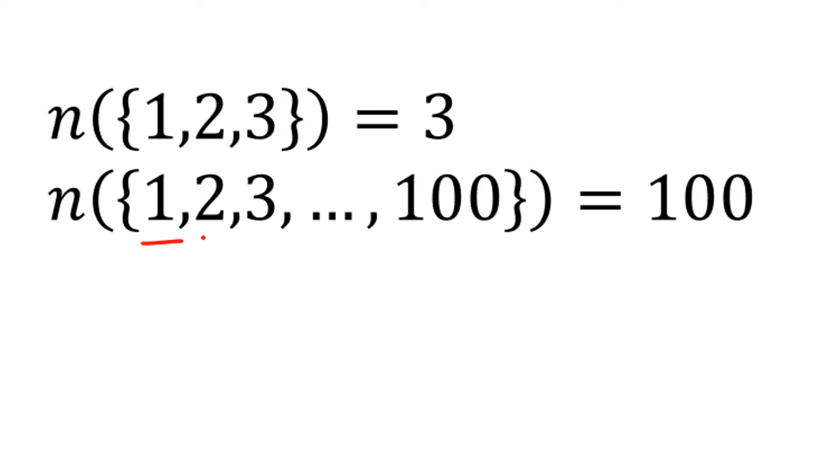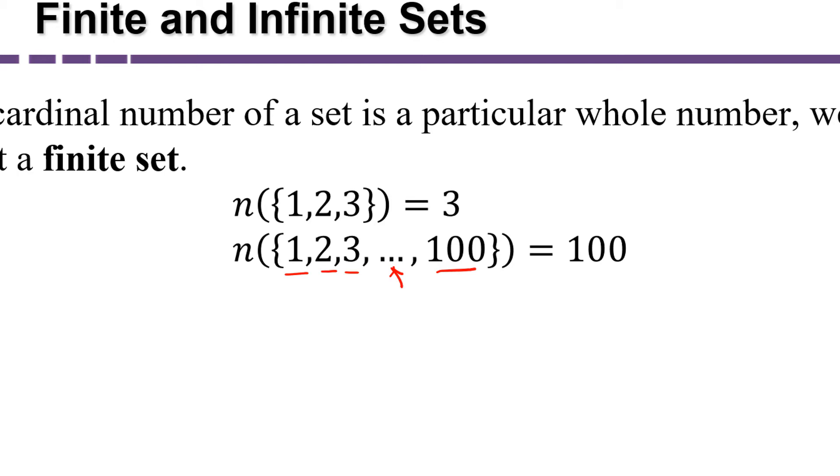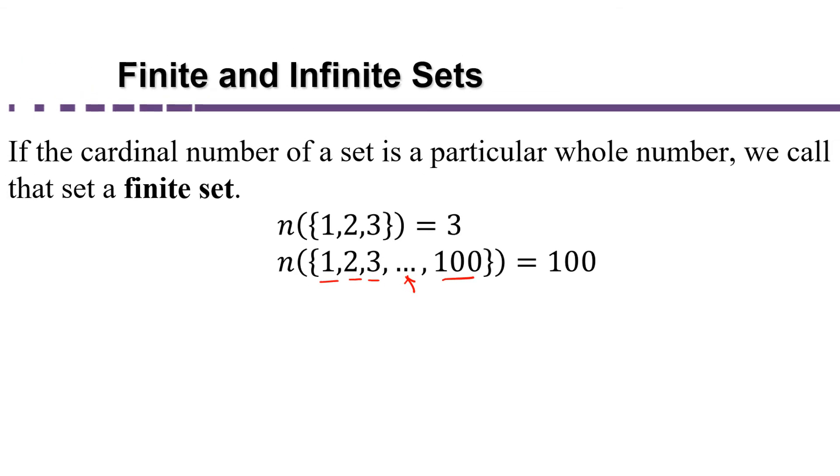Or the set one, two, three, dot dot dot, a hundred is telling you that you continue the pattern of increasing by one until you get to a hundred. So if the set starts with one and ends with a hundred, there are a hundred elements in that set. So the cardinality of that set is a hundred.